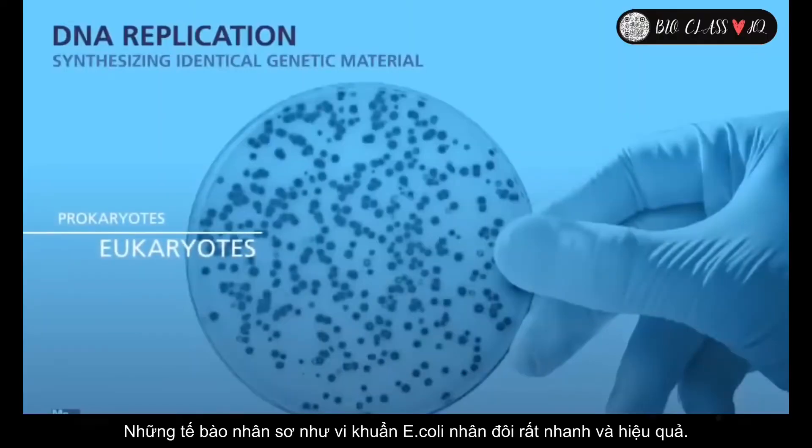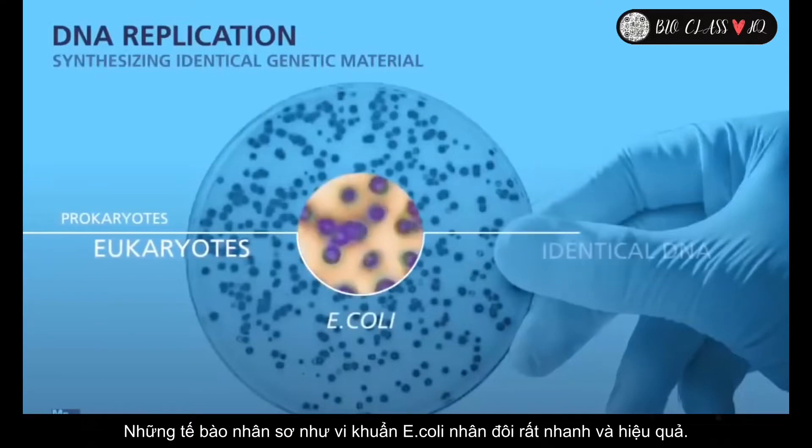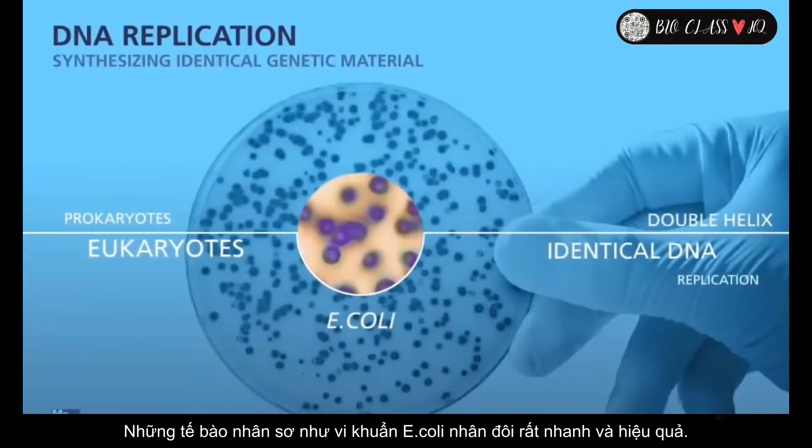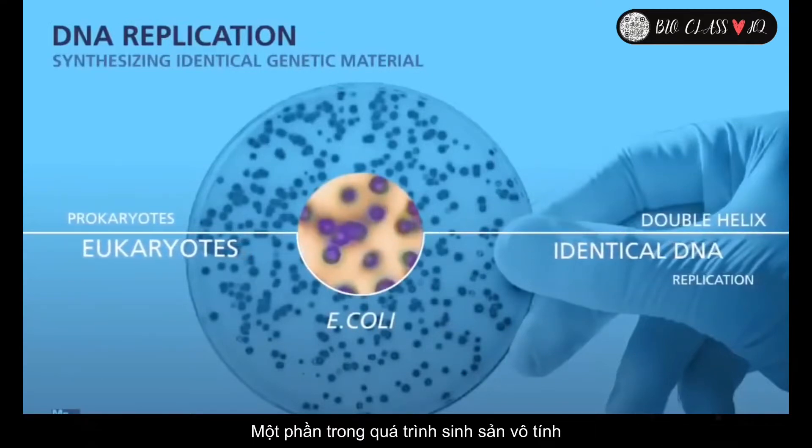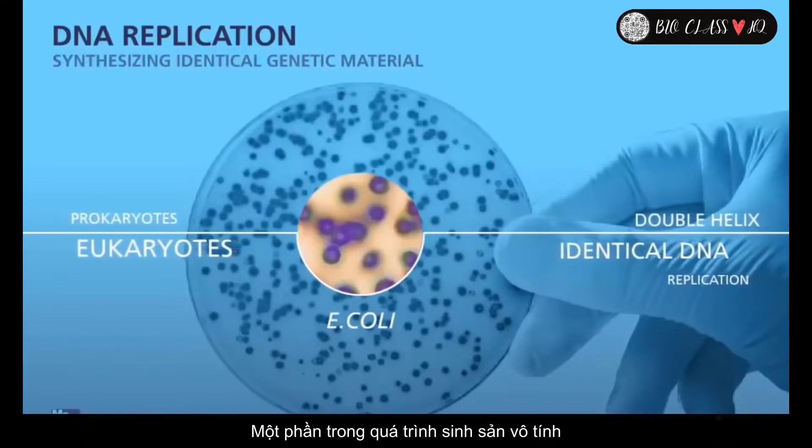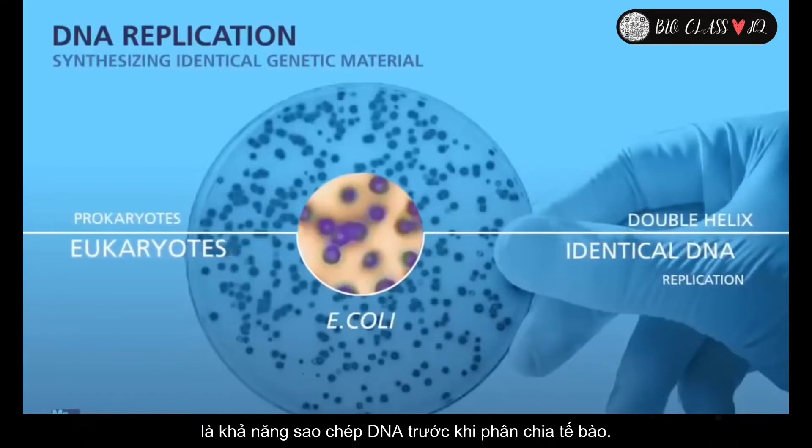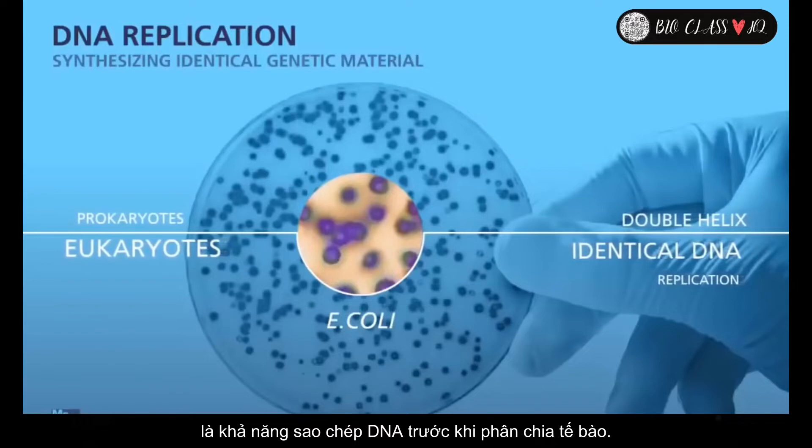Cells, like these prokaryotic E. coli cells, replicate themselves quickly and efficiently. Part of the process of asexual reproduction is the ability of cells to make identical copies of their DNA before cell division occurs.